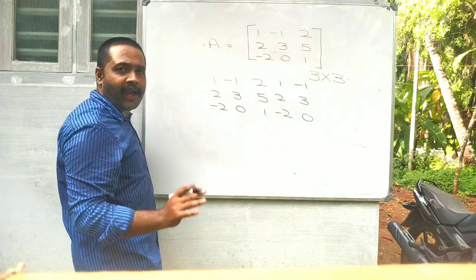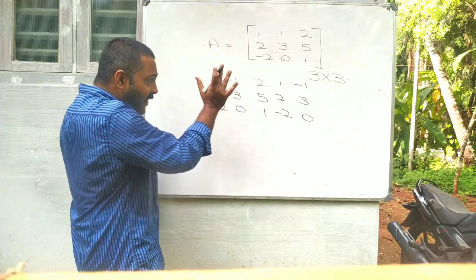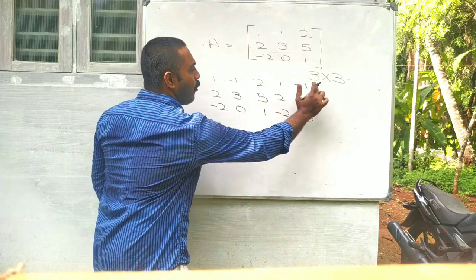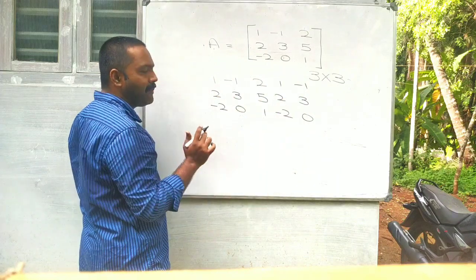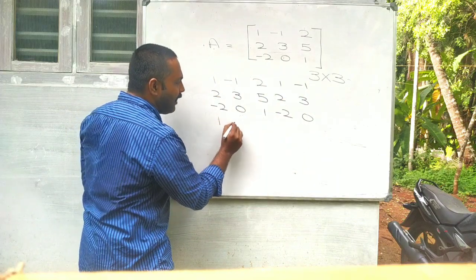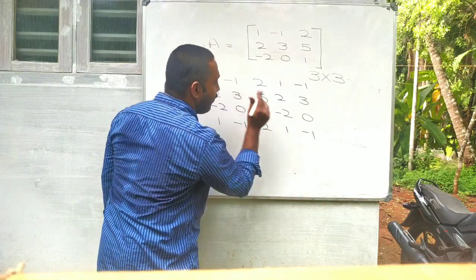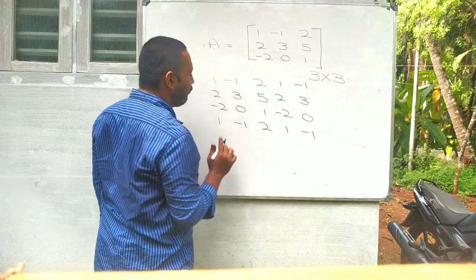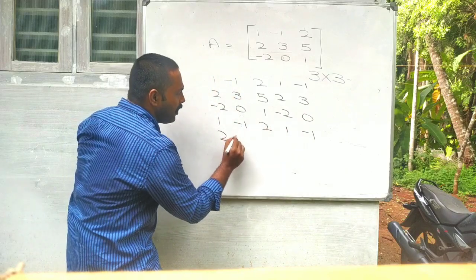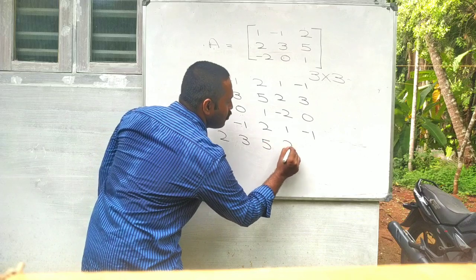Okay, clear. In the middle of the row, first row, second row. First row 1, minus 1, 2, 1, minus 1. First row elements copy. Then 2, 3, 5, 2, 3.